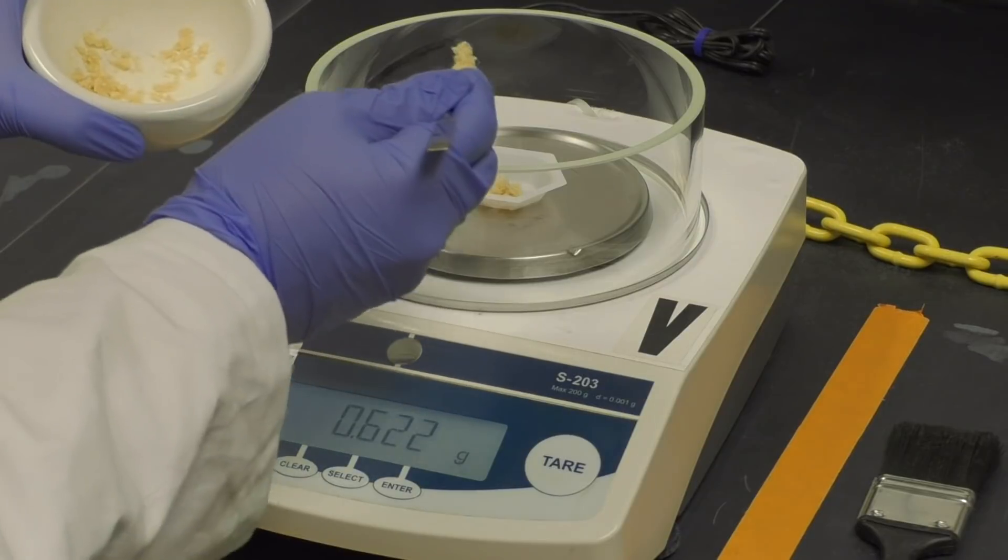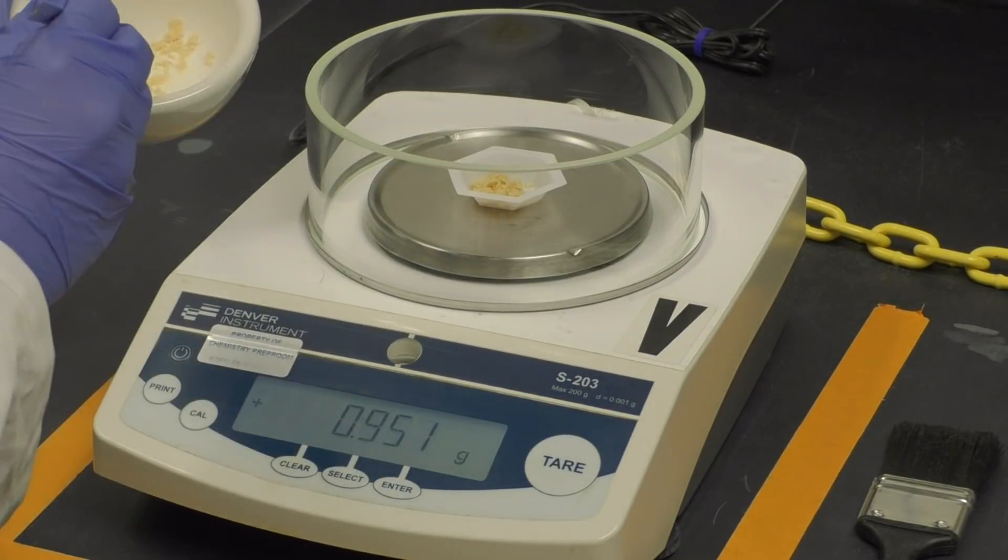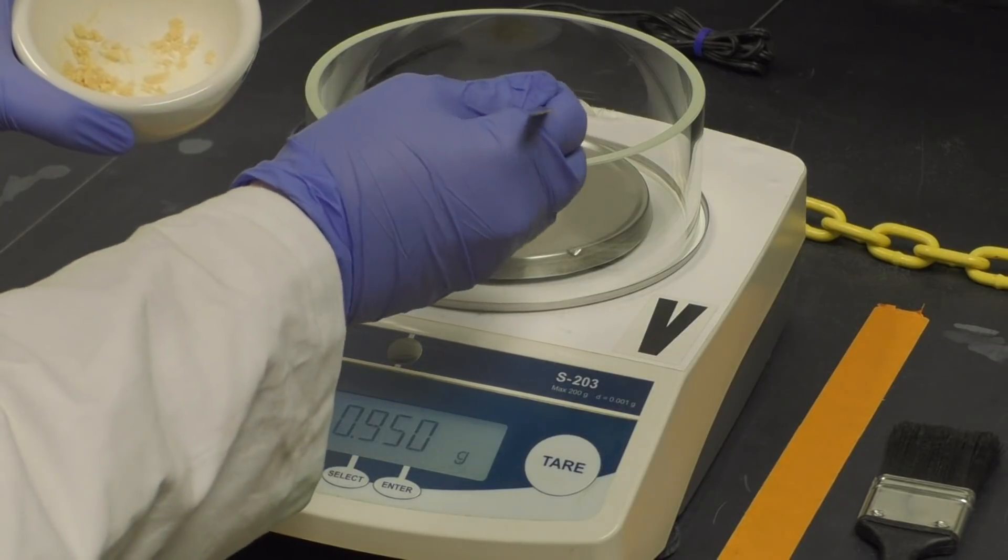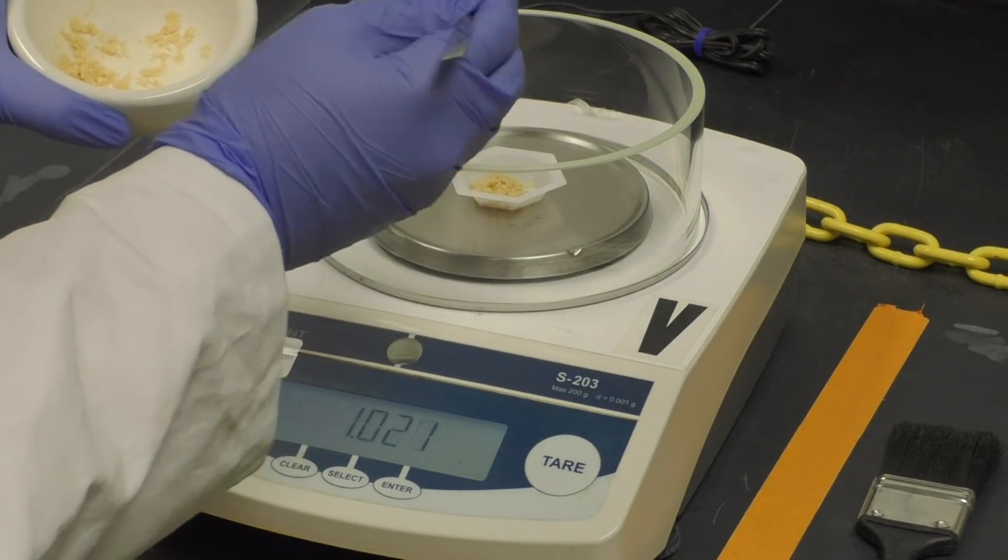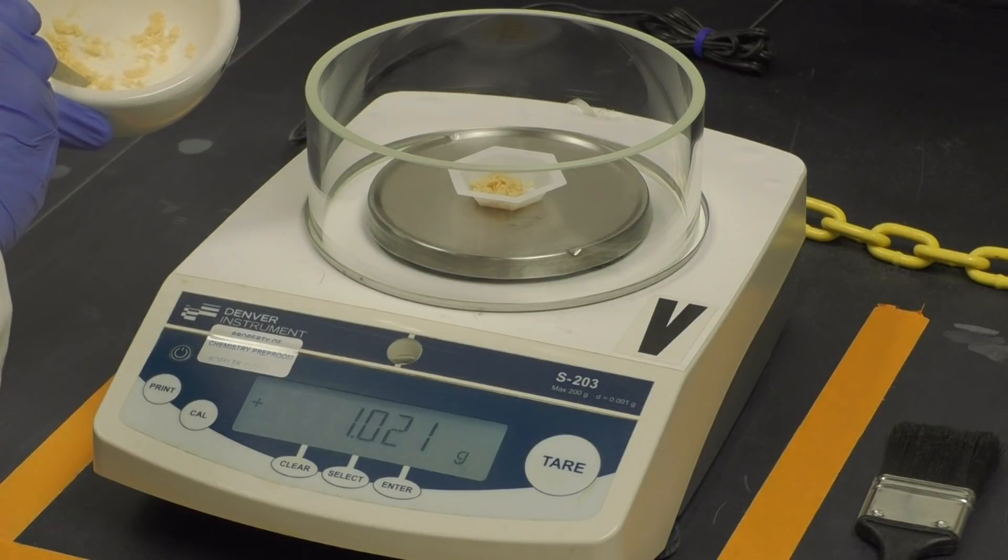Next, you will want to weigh out approximately 1 gram of your ground-up sample into a weighboat. You don't have to be exact, but make sure you write down the mass. Save the leftover ground sample for later use.